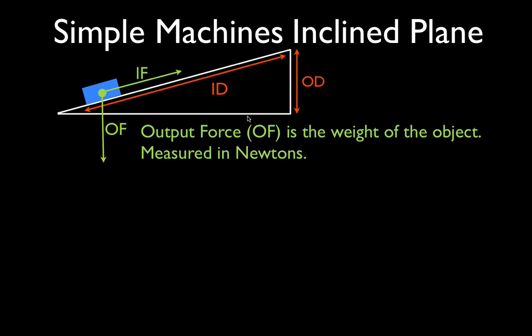The first one is the output force, which we abbreviate OF. The output force, I think the best workable definition is the weight of the object, and it is measured in newtons. It's a force, forces are measured in newtons.